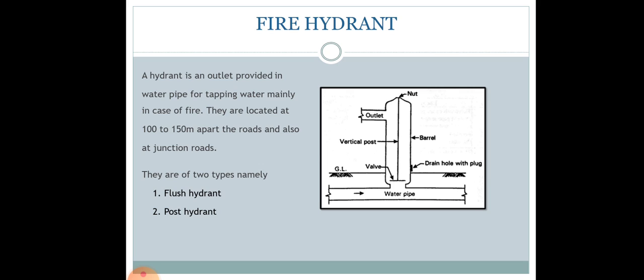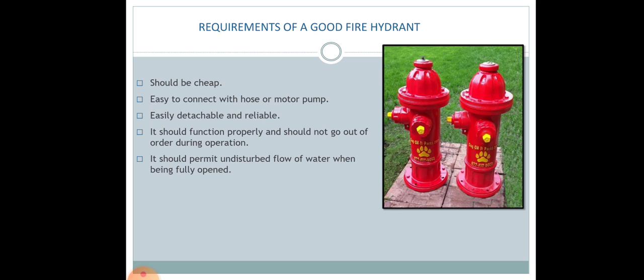Fire hydrants are very important in any building. A hydrant is an outlet provided in the water pipe for tapping water that may be needed in case of a fire. They are located at spacings of 100 to 150 meters apart along roads and at road junctions. There are mainly two types: the flush hydrant and the post hydrant. Requirements of a good fire hydrant include being cheap, easy to connect with a motor pump or hose, easily detachable, reliable, and capable of functioning properly during any operation. It should permit undisturbed flow of water whenever fully opened.